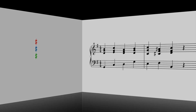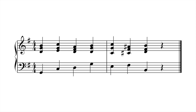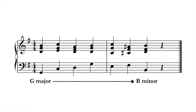Let's compare two examples, now modulating from G major to B minor. Since this is a modulation to a minor key, there are two accidentals that must change: C must go to C-sharp, and A must go to A-sharp as the new leading tone. Here, the second chord of measure two introduces both the A-sharp and the C-sharp at the same time. The effect is rather sudden, despite the relatively smooth voice leading.